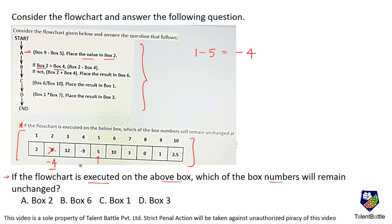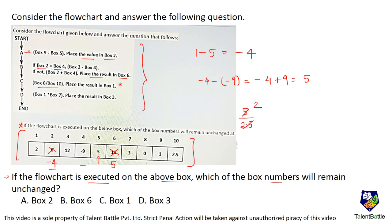Box 2 is minus 4 and box 4 is minus 9. Box 2 minus box 4 is minus 4 minus of minus 9, which equals minus 4 plus 9, giving positive 5. Place the result in box 6, so box 6 gets 5. Next, box 6 divided by box 10 is 5 divided by 2.5, which comes out to be 2. Place the result in box 1.